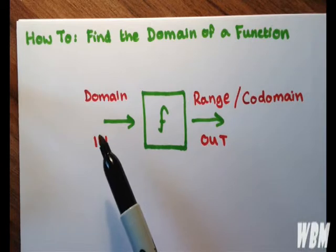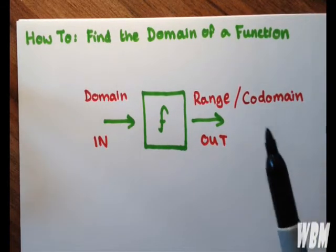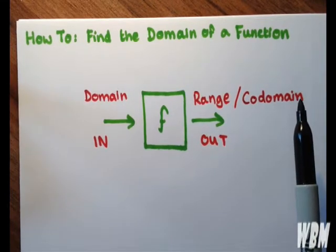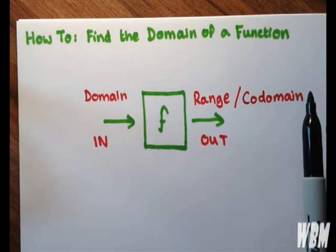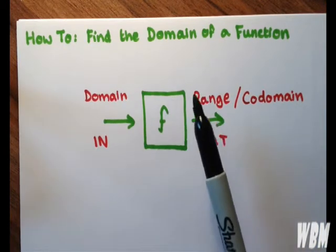The numbers that go in are referred to as the domain, and the numbers that come out are referred to as the codomain. That's the whole set of numbers, and the numbers that you get given what you put in is the range.